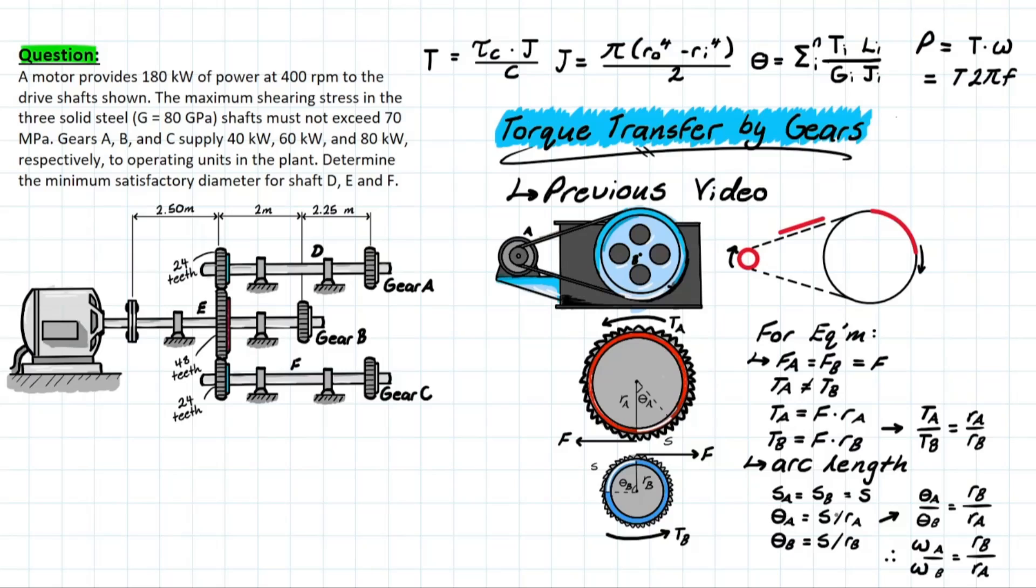Solving for theta, you have the arc length over the radius at A, and the theta B, very similar, dictated by the radius at B. Solving for the relationship, you have the ratio of theta A over theta B equal to the radius B over the radius of A, which is the inverse of what we had previously, which is important to understand. This relationship also applies for angular velocity as well, because we remember that angular velocity is simply putting a rate on that change in angle. So we can use the same relationship for angular velocity here as well.